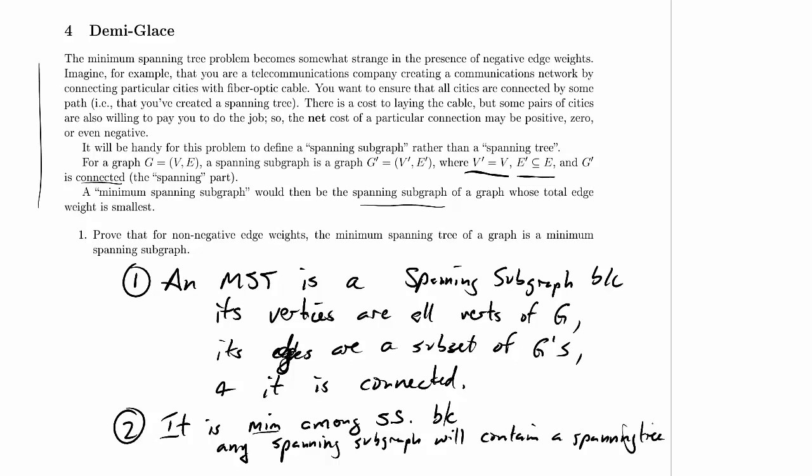That spanning tree cannot have cost any lower than the minimum spanning tree, because that's what the minimum spanning tree is. So it's a spanning tree with cost greater than or equal to the MST's. Now it's got this spanning tree inside of it with cost at least as great as the minimum spanning tree's.